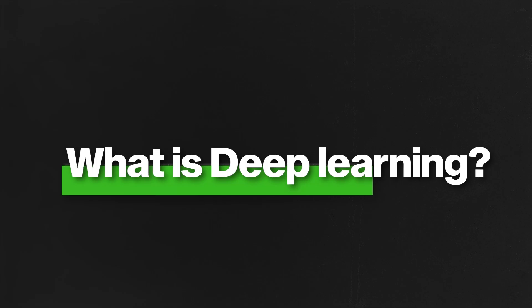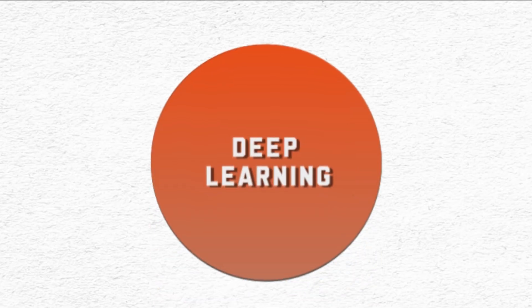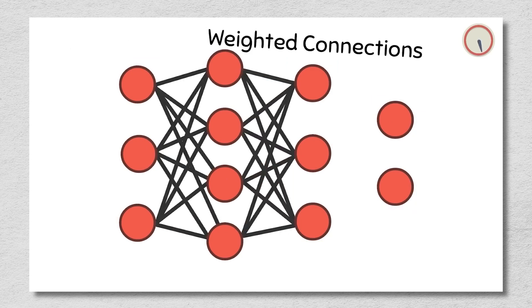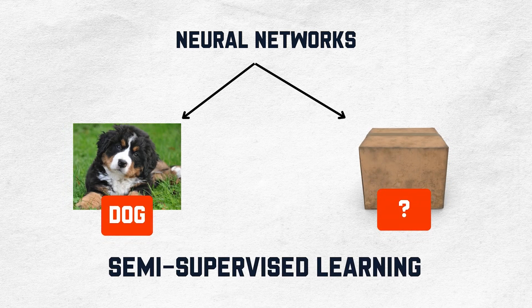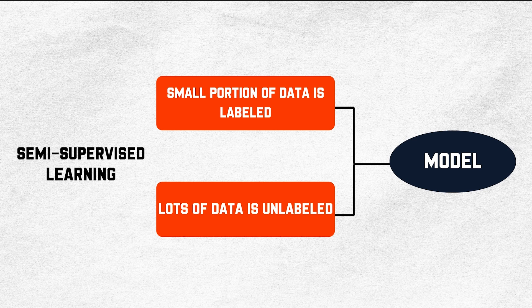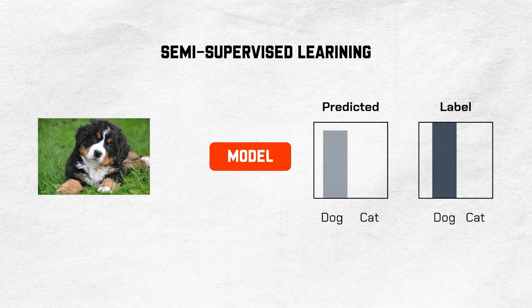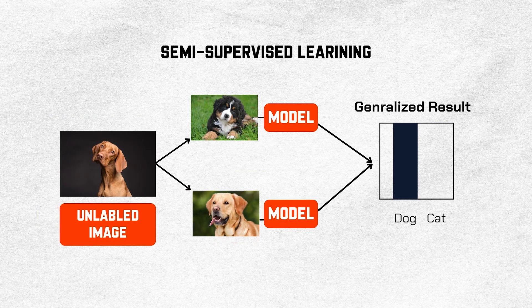Deep learning is a subset of machine learning — one more type of machine learning that uses artificial neural networks. Artificial neural networks are inspired by the human brain. They are made up of interconnected nodes called neurons that can learn to perform tasks by processing data and making predictions. Deep learning models typically have many layers of neurons, which allows them to learn more complex patterns than traditional machine learning models. Neural networks can use both labeled and unlabeled data — this is called semi-supervised learning, where a neural network is trained on a small amount of labeled data and a large amount of unlabeled data. The labeled data helps it learn basic concepts while the unlabeled data helps it generalize to new examples.